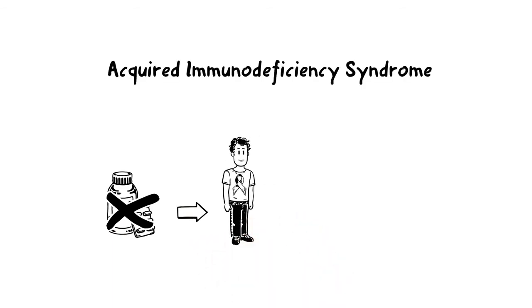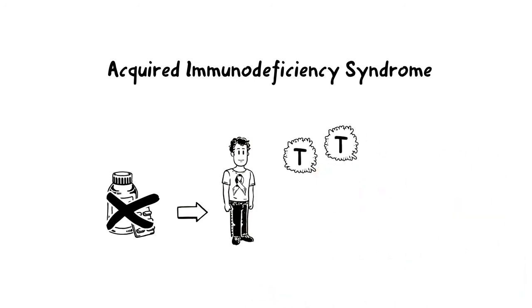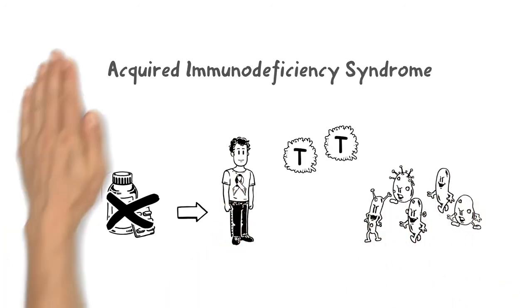Without treatment, it takes eight years on average for a person with HIV to develop AIDS, or acquired immunodeficiency syndrome. By then, there aren't enough T-cells to fight off various infections and diseases, so it's not the virus directly, but the diseases that are eventually fatal.